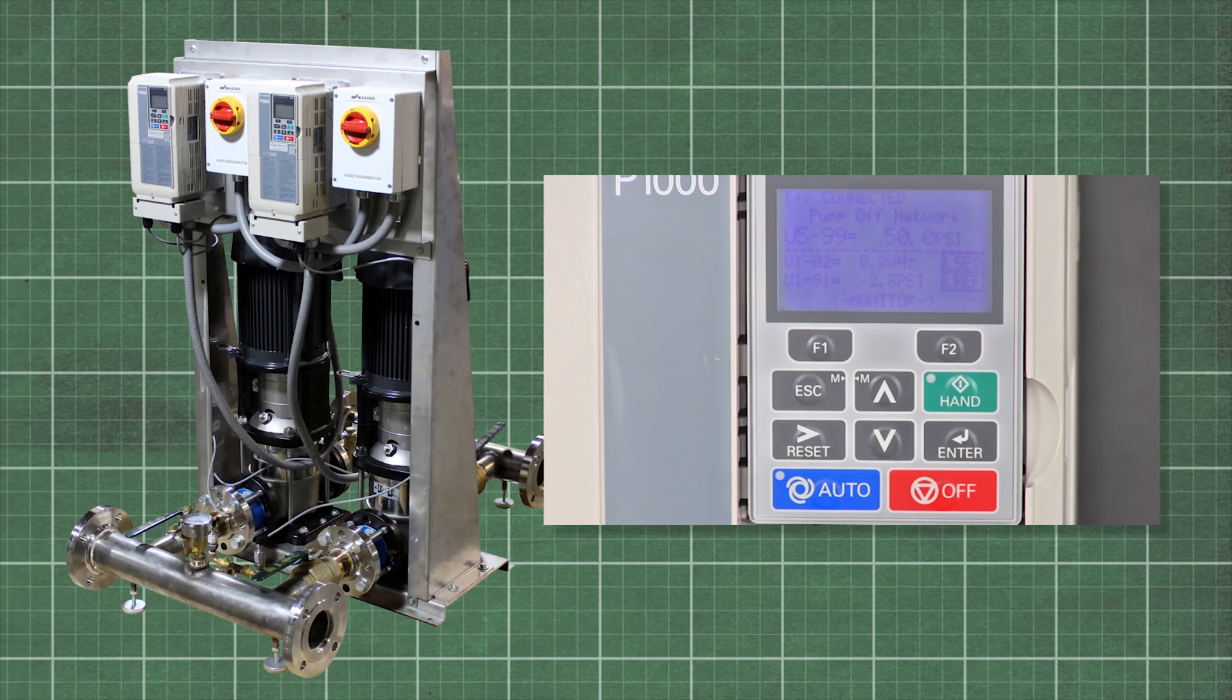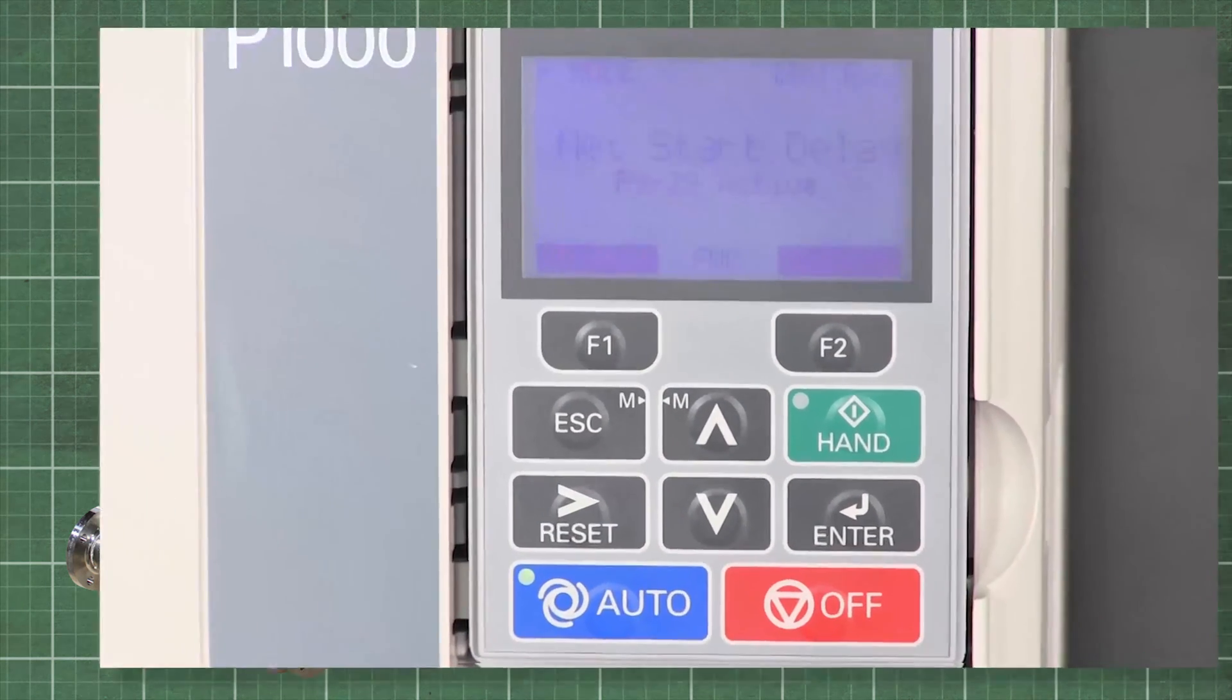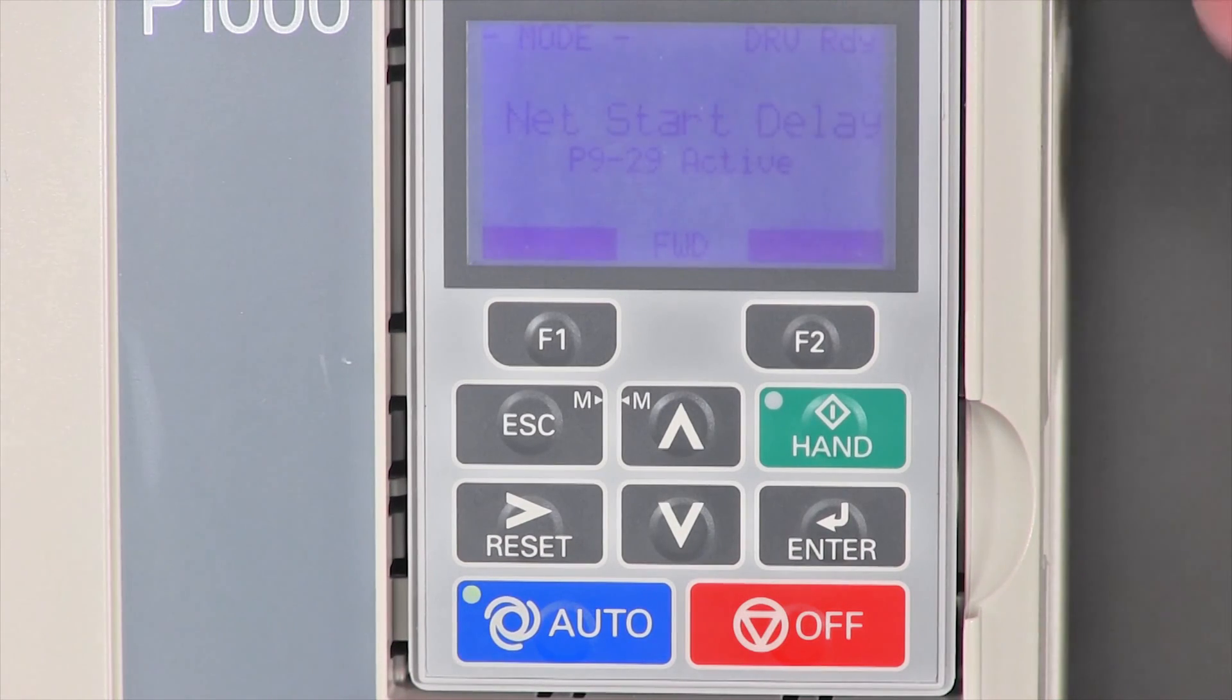Now we're ready to run in auto mode. The drive has been programmed for a set point of 50 PSI. Press the auto button. The pump should speed up and pressurize the system to 50 PSI. Check for leaks and close any open faucets or hoses.